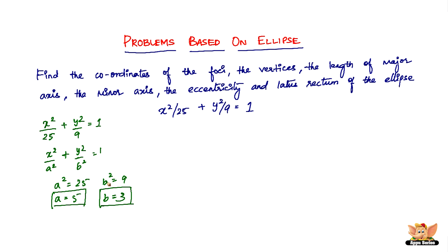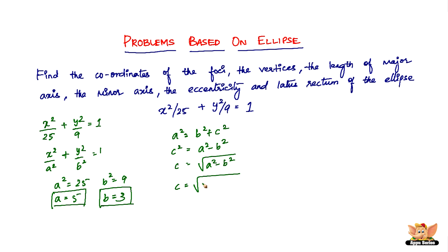The relationship between a, b, and C is a² = b² + c², so C² = a² − b². Therefore C = √(25 − 9) = √16 = 4. So we now have a = 5, b = 3, and C = 4.